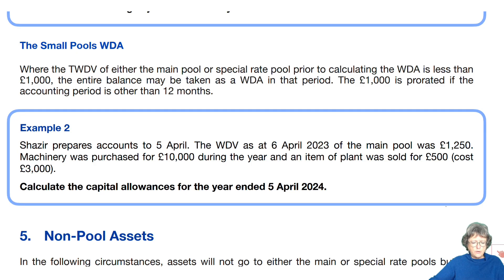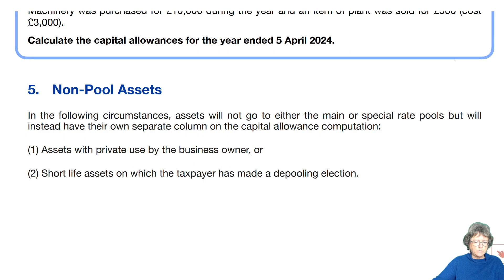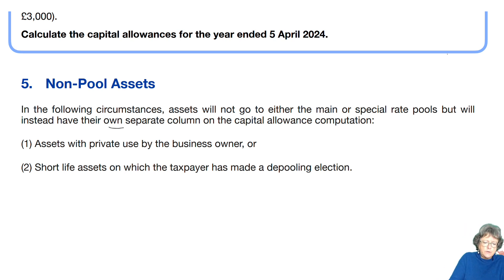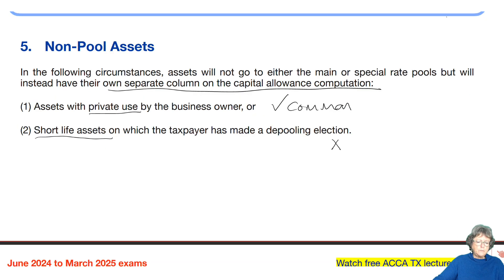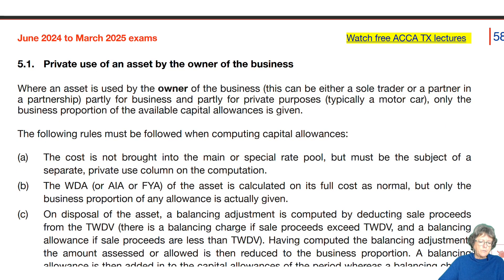The next section in the chapter we're going to look at is non-pool assets. These are assets that are not going to go into the main pool or the special rate pool. They have their own separate column in the capital allowances computation. There are private use assets and short life assets. These are common in the exam, with private use assets being the main ones you will come across.